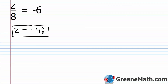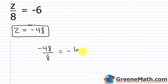Let's check z equals negative 48. Plug negative 48 in for z: negative 48 divided by 8 equals negative 6. A negative divided by a positive is negative, and 48 divided by 8 is 6 — so negative 6 equals negative 6. The solution is confirmed.